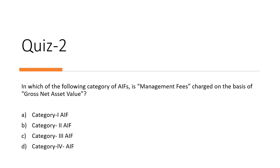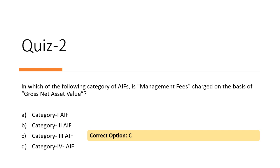The second question: in which category of AIFs is management fee charged on the basis of gross net asset value? There are different methods to charge management fee, but one kind of fund uses gross net asset value as the basis. The answer is C — it is Category 3 AIFs. For Category 1 and 2 AIFs the basis is different, and there is technically no Category 4 AIF.